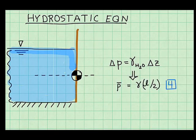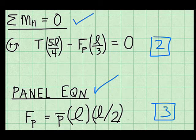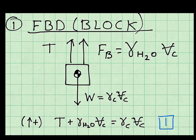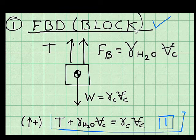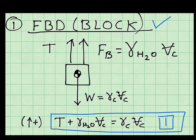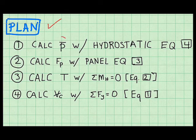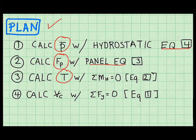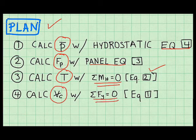So I rewrote my work to make it neater. And I noted, looking back, that I now have 4 equations and 4 unknowns. So the hydrostatic equation is equation number 4. The panel equation is equation 3. Moment equilibrium about the hinge is equation number 2. Force equilibrium applied to the block is equation number 1. Now I just need to find the easiest way to solve these 4 equations. So my plan is, calculate the pressure at the depth of the centroid with equation 4. Calculate the net pressure force, or resultant pressure force, with the panel equation, which is equation number 3. Calculate the tension in the cable with moment equilibrium, equation 2. And lastly, find the problem goal, the volume of the concrete, by applying force equilibrium, which is equation 1.